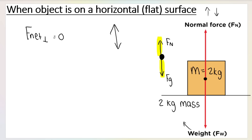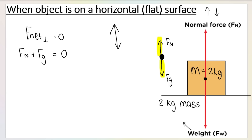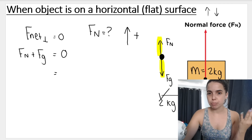We are considering forces going up and down. Overall, the net force in that direction is zero — the box is not moving. Looking at the free body diagram, I have the normal force and FG in the Y direction. So FN plus FG equals zero. We choose up as positive, so when substituting, FN is what we're looking for and I leave it. FG is going down.